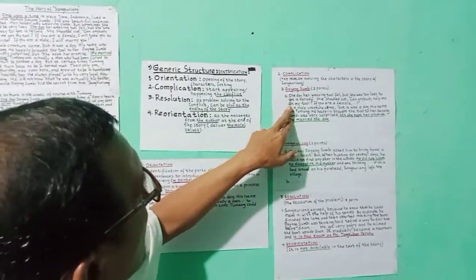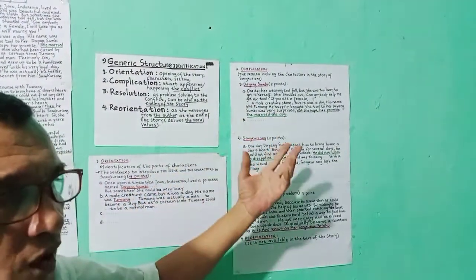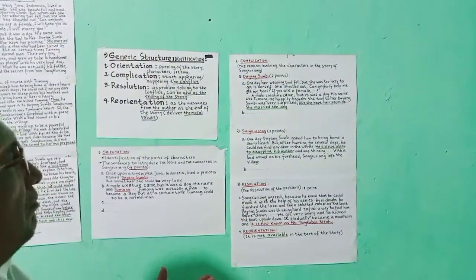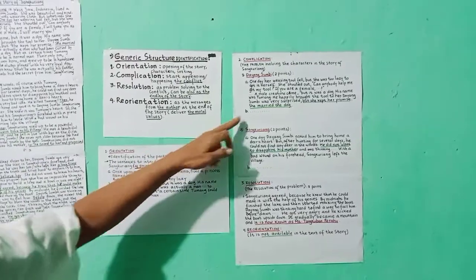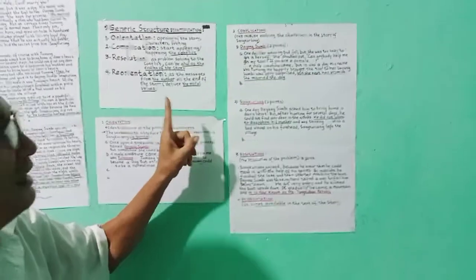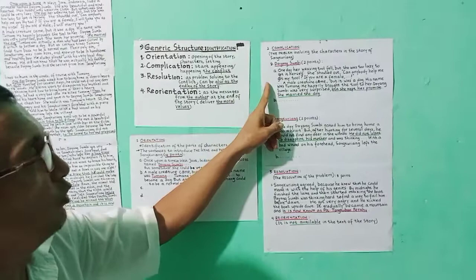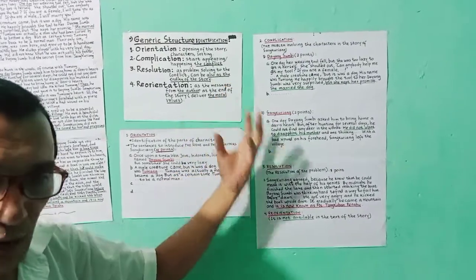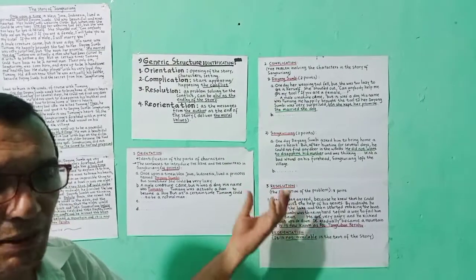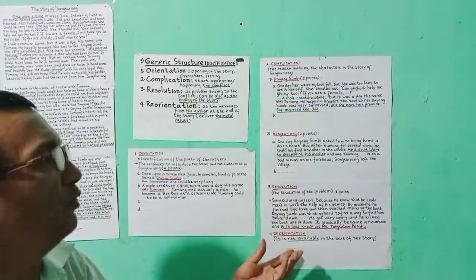That's the first problem from Dayang Sumbi's side. She shouted, asked for help, and she promised if it's a male, she will marry him. You can find one point more. One more problem is in the text, please find it yourself.